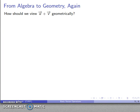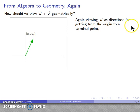Well, let's take a look at the geometry. How do I want to view the sum of the two vectors u plus v? Well, again, I can view this vector u as the directions we're getting from the origin to some terminal point.